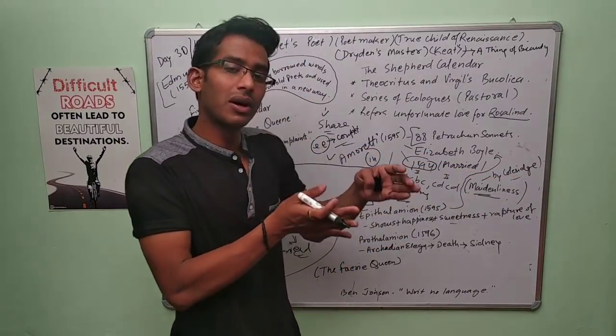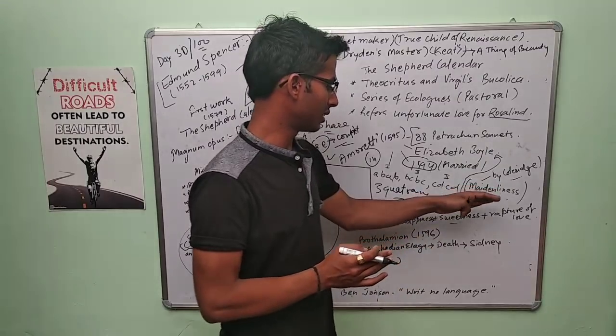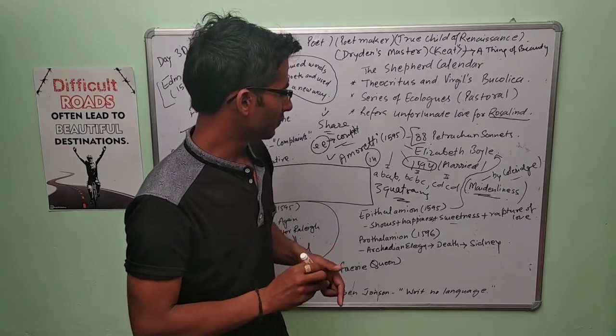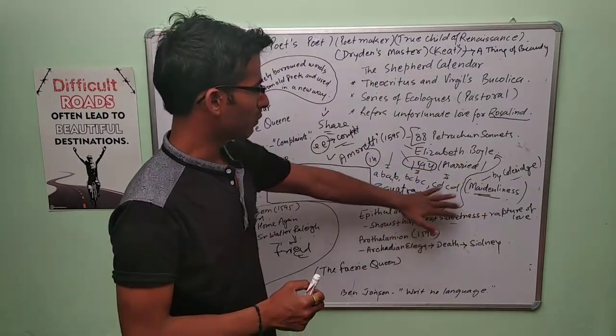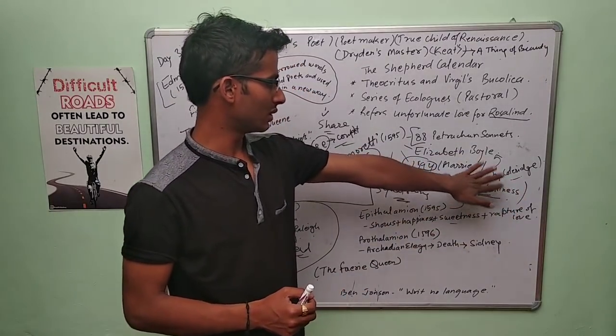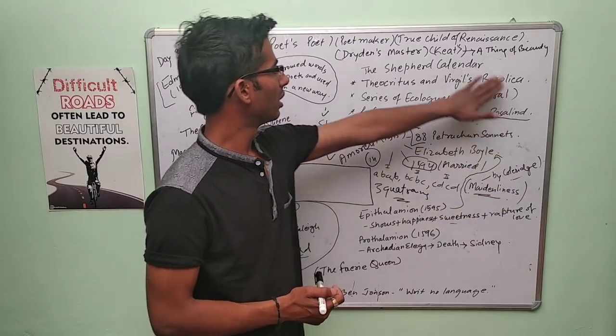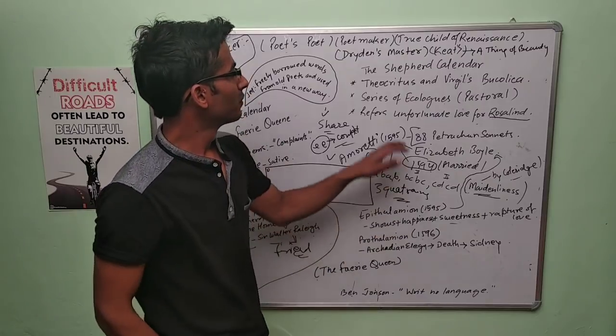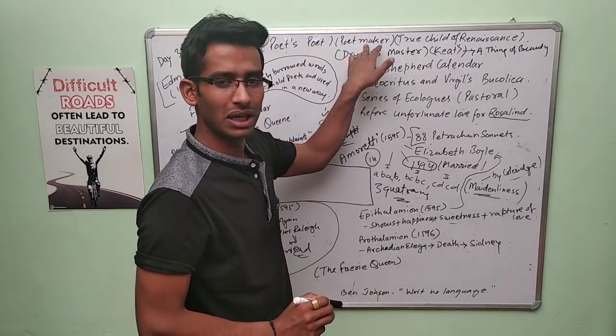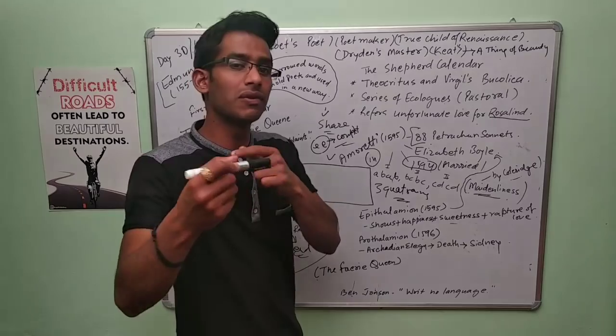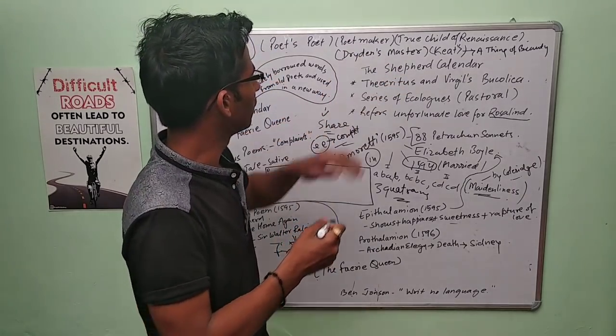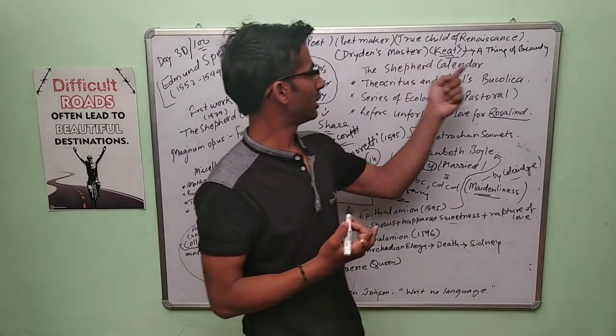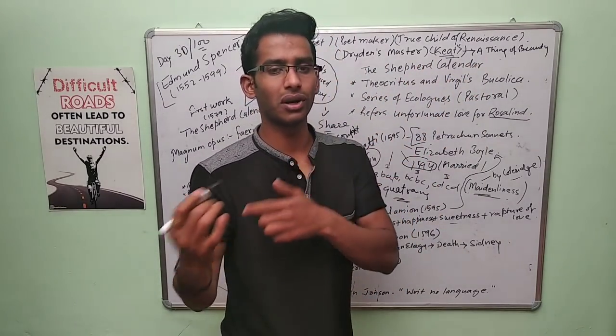Lots of poets like Keats, Donne, and Coleridge were influenced by Edmund Spenser. He is called poet's poet because they got influenced. Later, if you find, what was the impact on Keats? 'A thing of beauty is a joy forever' is the line which has influence of Spenser.